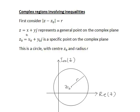Here, z = x + yj represents a general point on the complex plane, z₀ = x₀ + y₀j represents a specific point on the complex plane, and r is a real number. We're looking at sketching the set of points z that satisfy this equation.